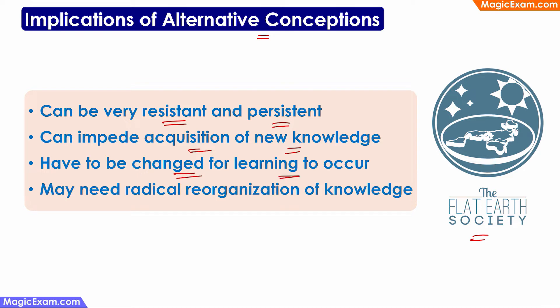The alternative conception has to be changed for any new learning to occur. And if the person gets rid of the alternative conception and starts believing in the scientific explanation, then a radical reorganization of knowledge is required in the person's brain — because they have been believing that the earth is flat for a very long time. A complete radical reorganization of that belief and knowledge is required before the person can start accepting new knowledge.